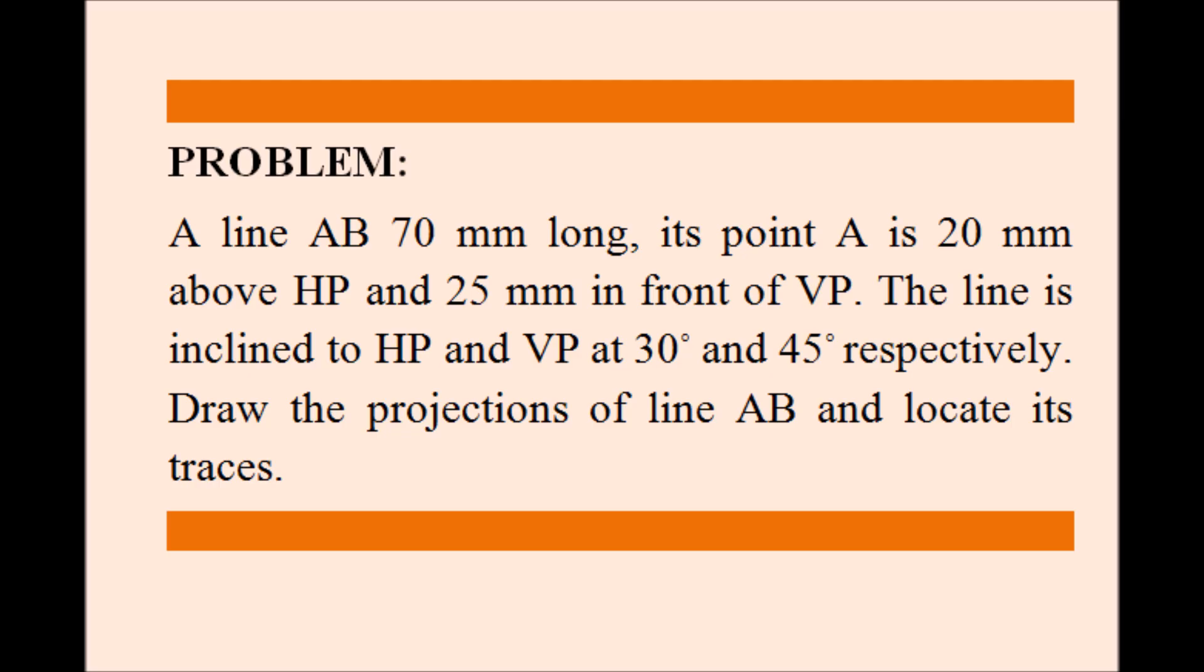Problem statement is: a line AB is 70mm long, its point A is 20mm above HP and 25mm in front of VP. The line is inclined to HP and VP at 30 degrees and 45 degrees respectively. Draw the projection of line AB and locate its traces.